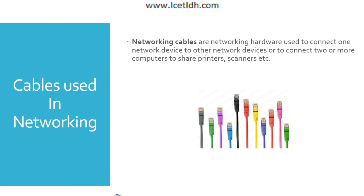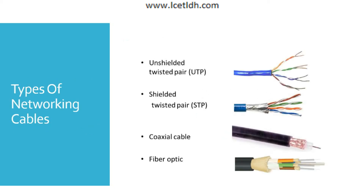Next we have cables. Cables are the hardware which we use to connect the network — connecting two devices to a network or connecting two or more computers to share printers, scanners, etc. For example, if we have a printer and want to share it with five systems, we connect that printer with the help of cables. There are basically four types of cables: Unshielded Twisted Pair (UTP), Shielded Twisted Pair (STP), Coaxial cable, and Fiber Optic.